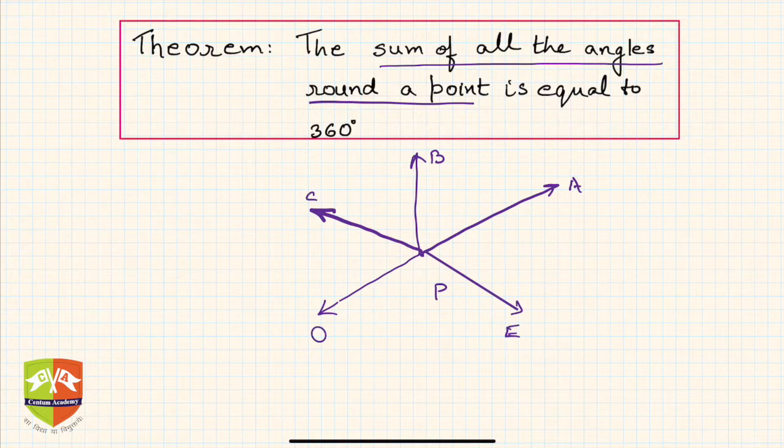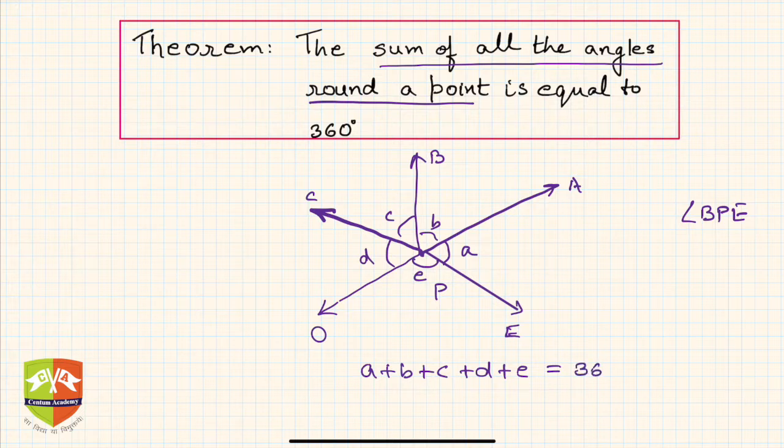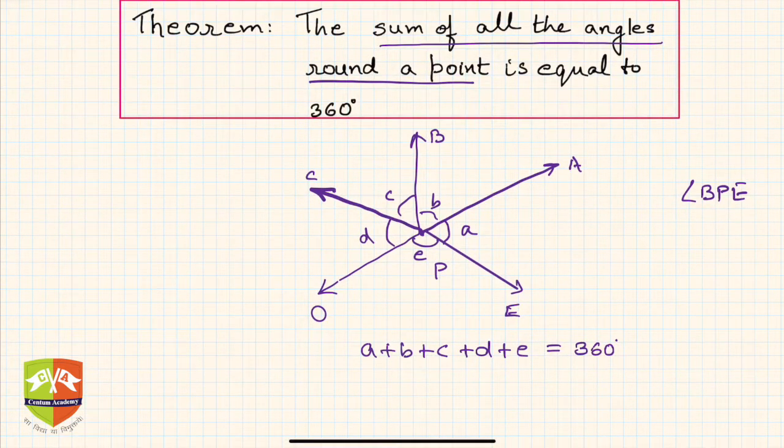How many angles? Five angles are seen directly. There are many more angles, for example angle BPE is also an angle, but we are considering only these direct ones. So let's say this is small a, this is b, small b, small c, d and e. So you have to prove that a plus b plus c plus d plus e is always 360 degrees. If you add all the angles around the point, it will give you 360 degrees.